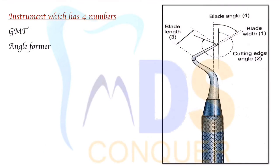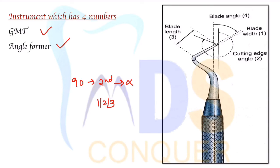Instruments with a four-number formula include GMT and angle formers. Most instruments that have a cutting edge angle of 90 degrees will not include the second number, resulting in a 3-digit formula. In that case, the second position is occupied by the third number, and the third position by the fourth number.